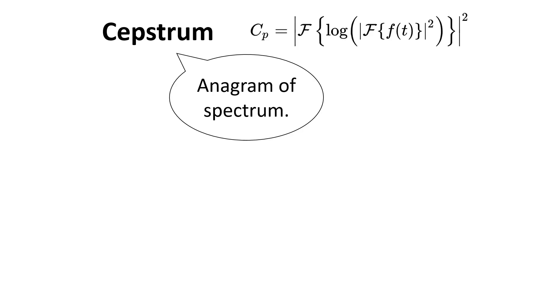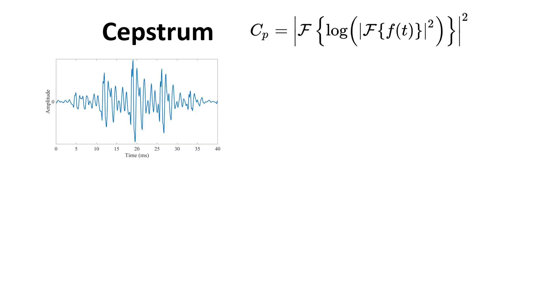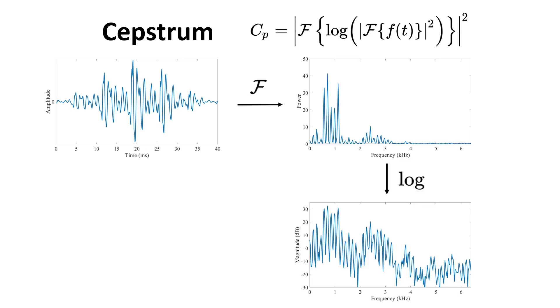Okay, so to recap, we have a window from an audio input, we apply the Fourier transform, we take the logarithm of the output, and we apply the Fourier transform again on the result.